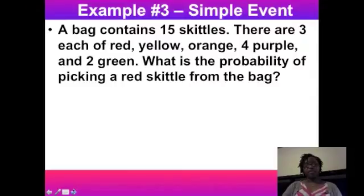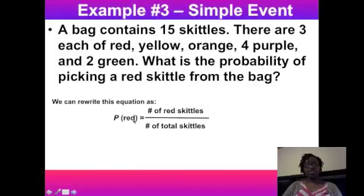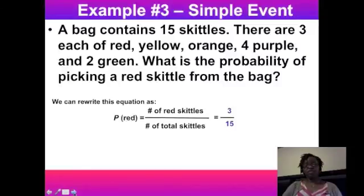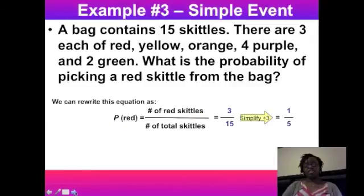In example three, same bag of Skittles, you want the probability of picking a red Skittle. The probability of red equals the number of red Skittles over the total. There are three red out of 15 total Skittles, giving 3/15. Since both are divisible by three, we simplify to 1/5.